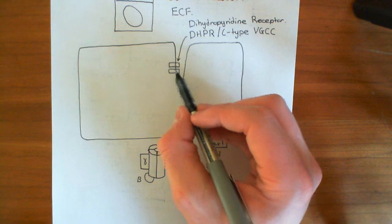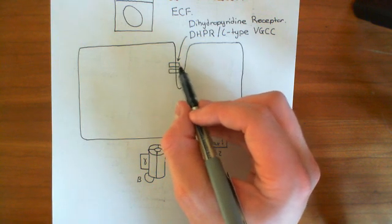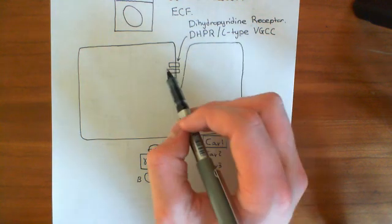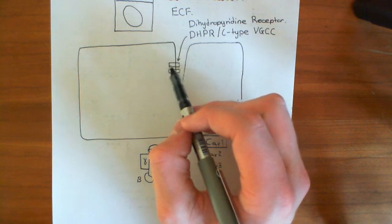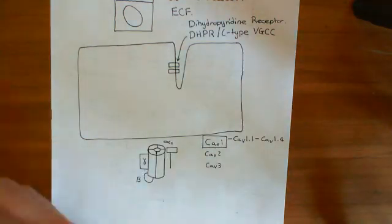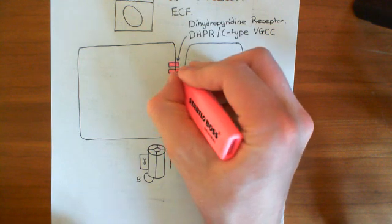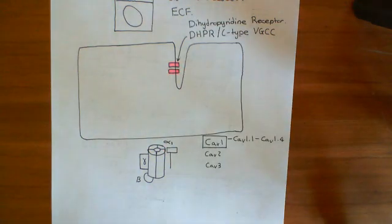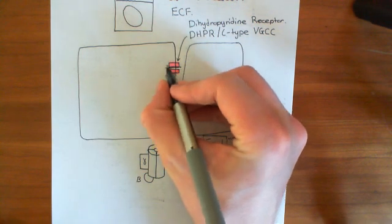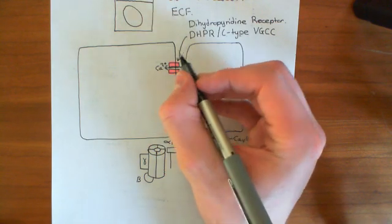When the action potential reaches this portion of the membrane, it causes depolarization of the electrical potential across the membrane. Since this is a voltage-gated calcium channel, when the electrical potential difference across the membrane is depolarized, the channel becomes active, changes conformation, and opens. Now the dihydropyridine receptor is open, and as a calcium channel, it allows calcium to move from the extracellular compartment to the intracellular compartment — so calcium comes in.